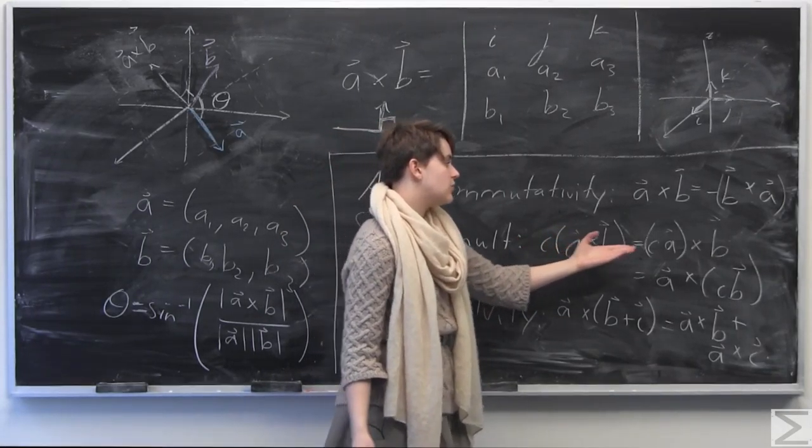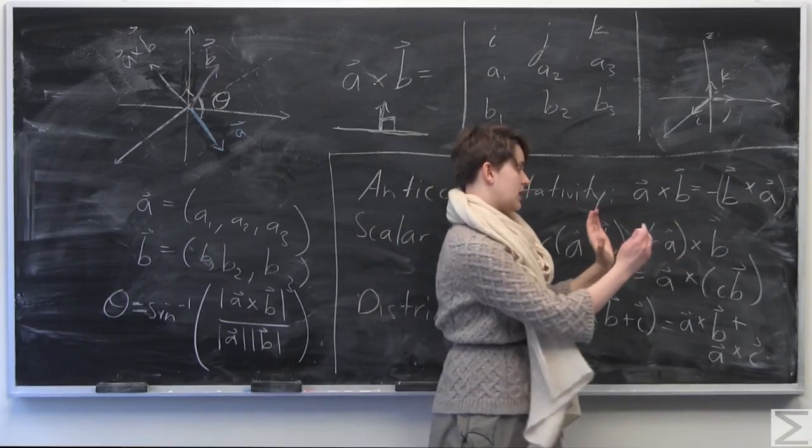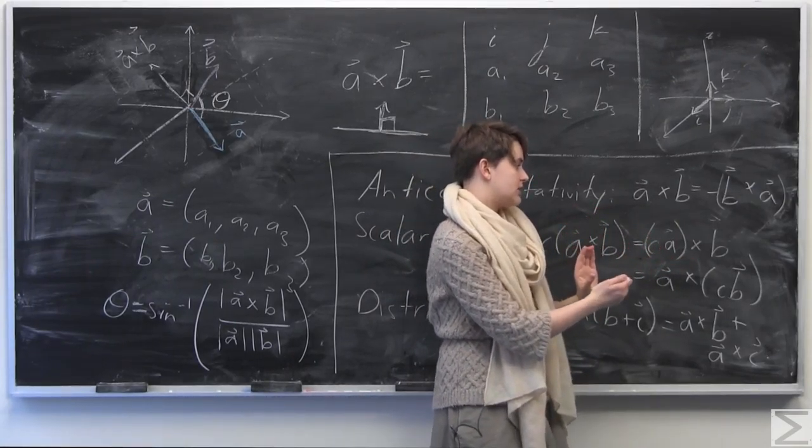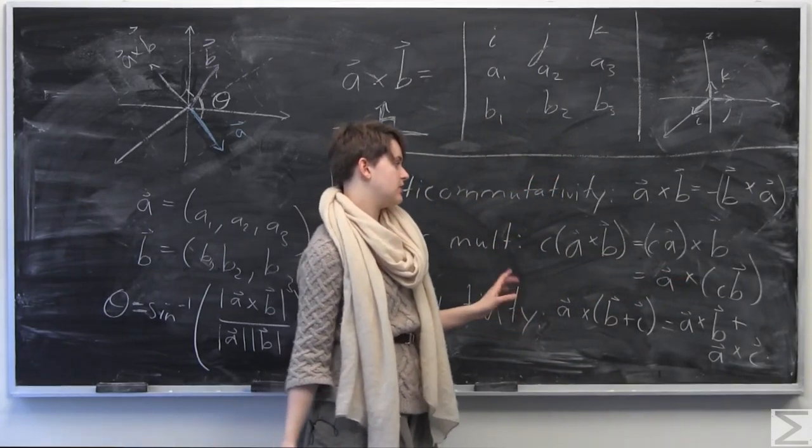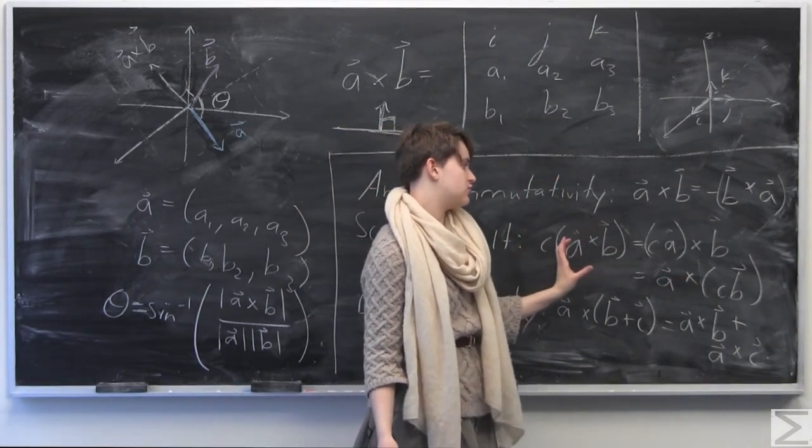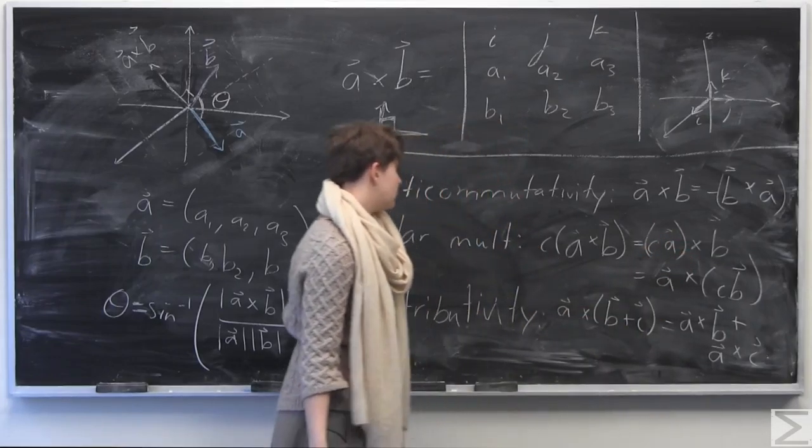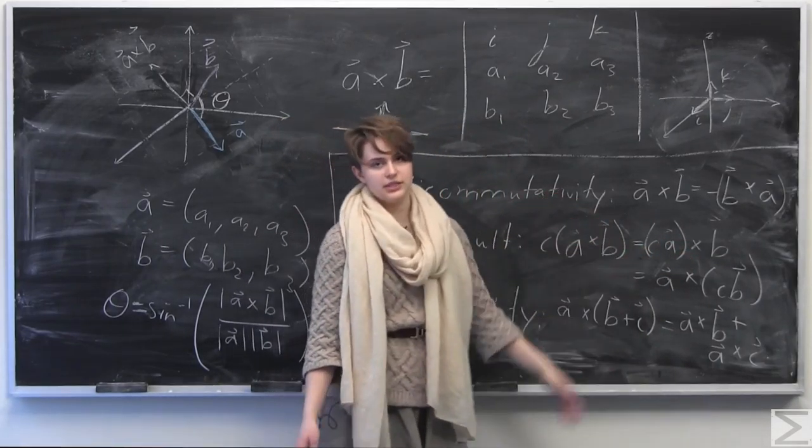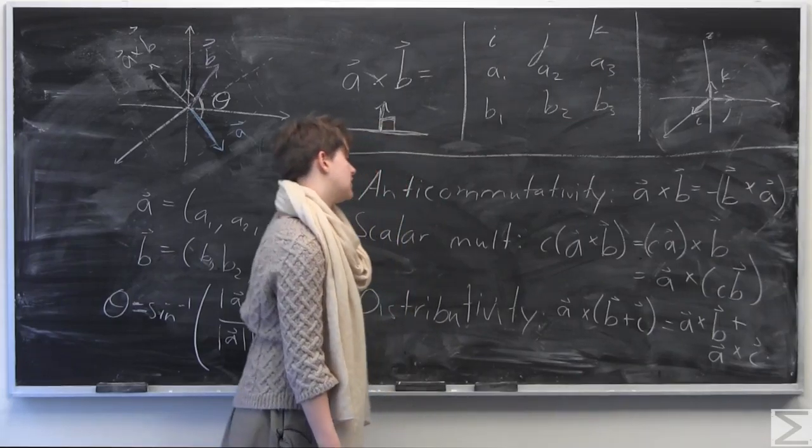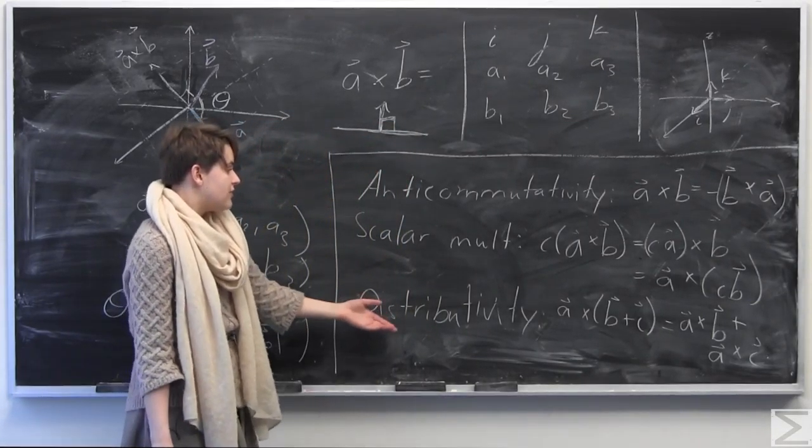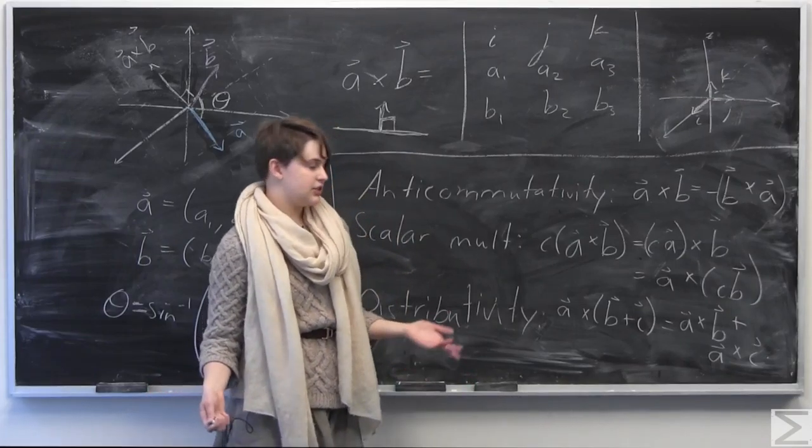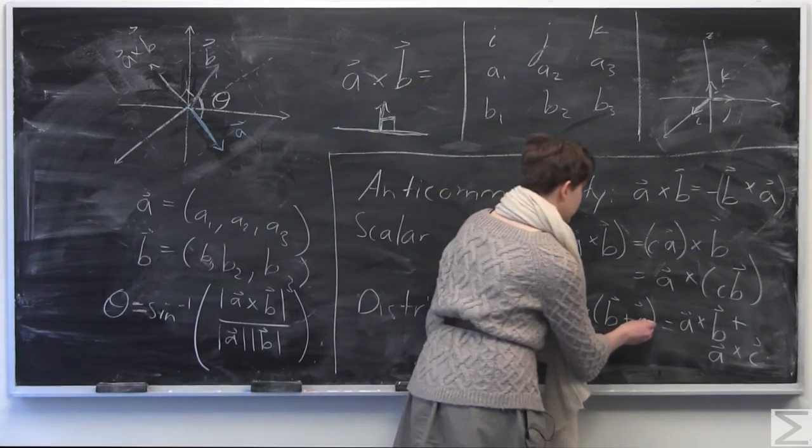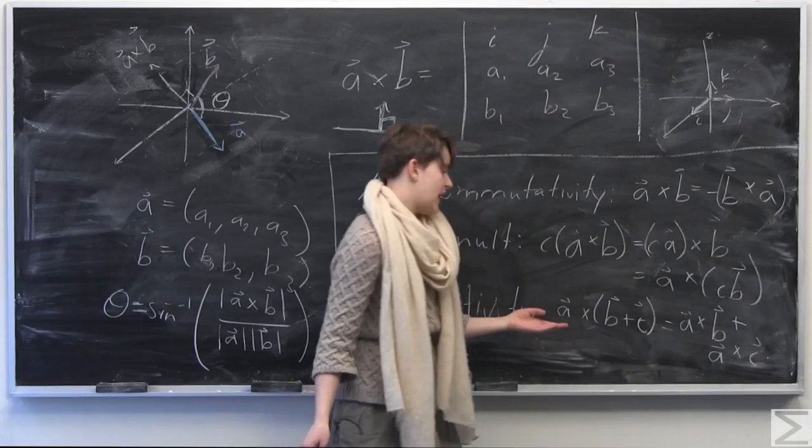The next property is going to be scalar multiplication, the same as the dot product here, so when we have some scalar c in R, so some kind of real number c, we have c times quantity a cross b is going to be equal to either quantity c times vector a cross vector b, or a cross c times vector b. So the constant just kind of distributes inside. When you have a scalar here on the outside, it distributes inside when you're doing the cross product, which is a very nice property.